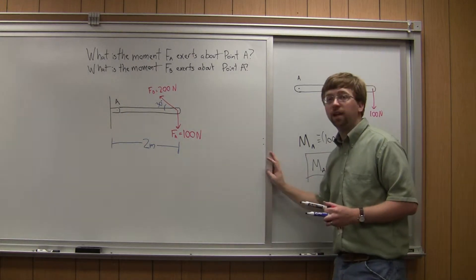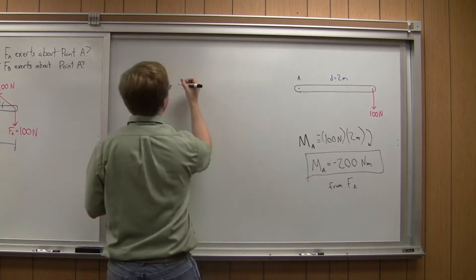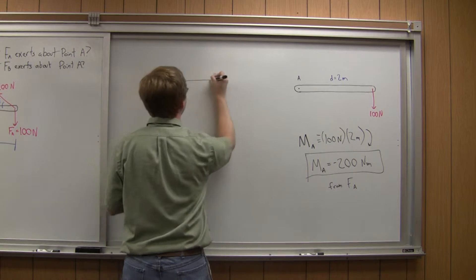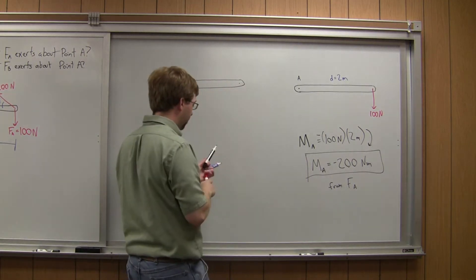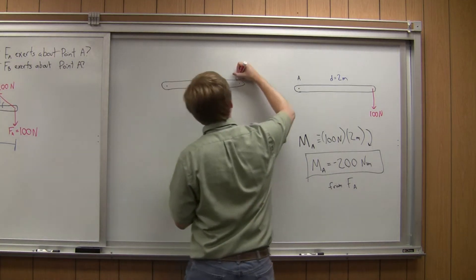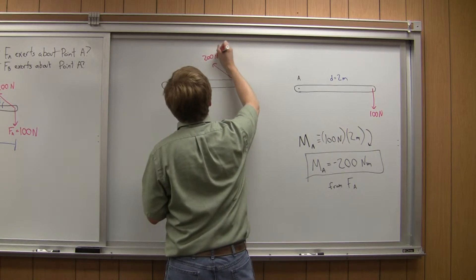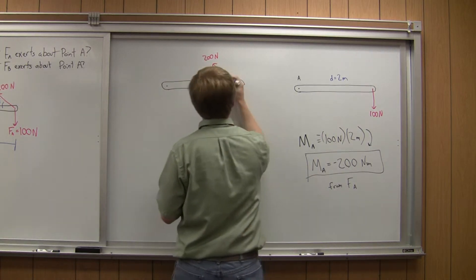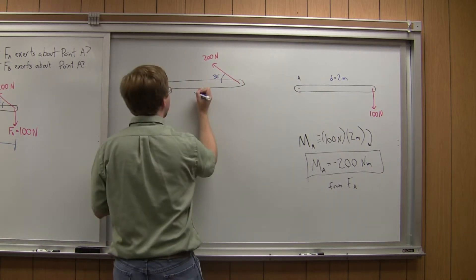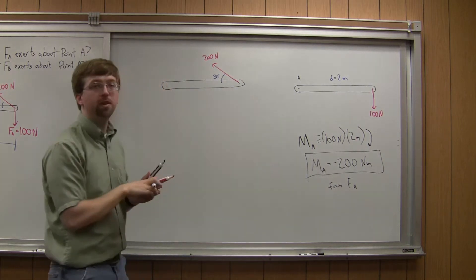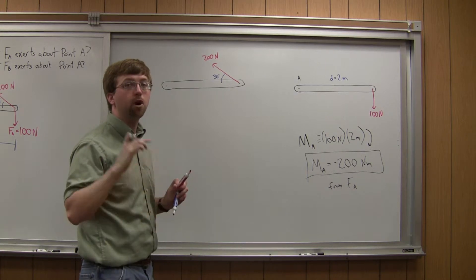Now, let's do the same thing except with force B. So again, we have point A. And we're going to have a force over here of 200 newtons at a 30 degree angle. And so D is not going to be 2 meters this time. So it's important to remember this D is always going to be the perpendicular distance.